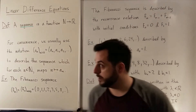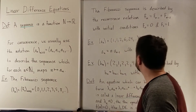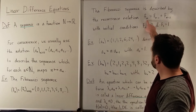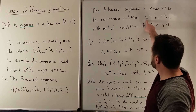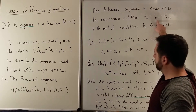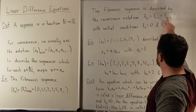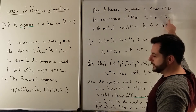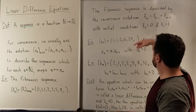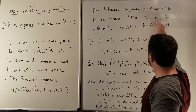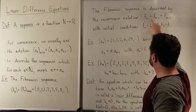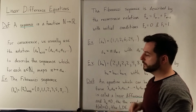We can describe that in a nice equation: f_sub_n, the nth term in the sequence, is the n-minus-first term (the previous term) plus the n-minus-second term (the term before that) added together. So the previous term plus the term before that gives the new term.